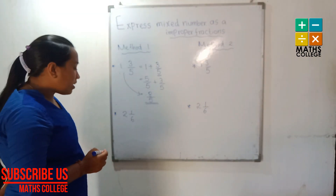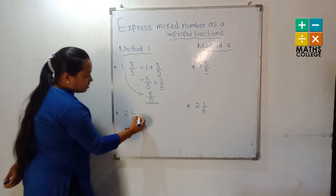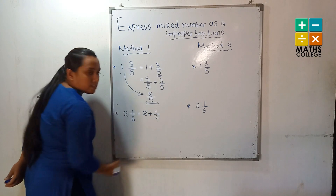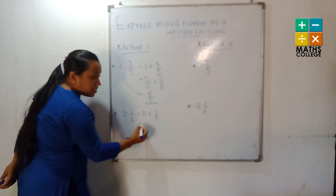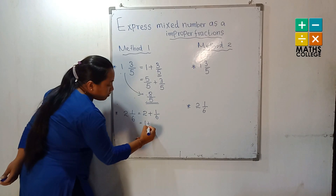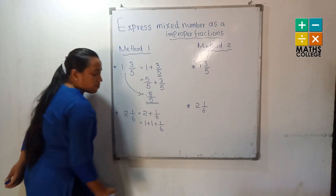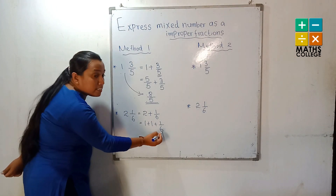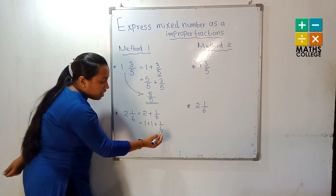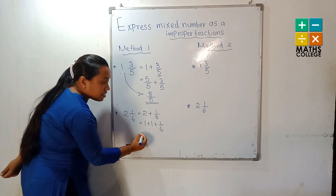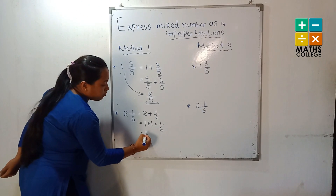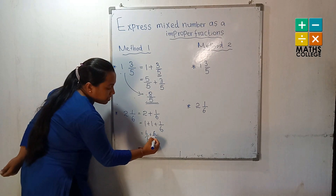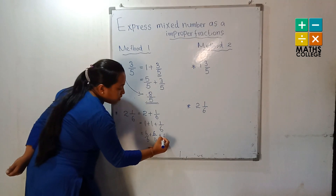Let's go to another example: two and one upon six. Two is equal to one addition one addition one upon six. Considering the denominator of the given fraction — the denominator is six. One can also be written as a fraction: six upon six. This one also six upon six, and one upon six.